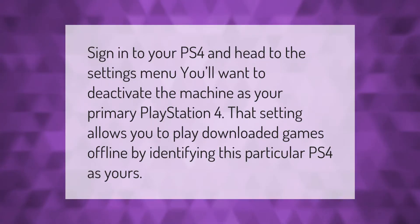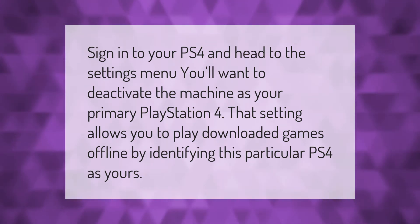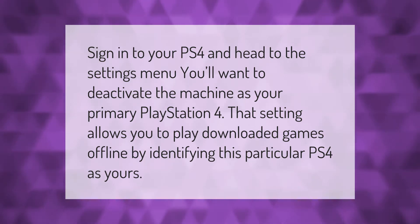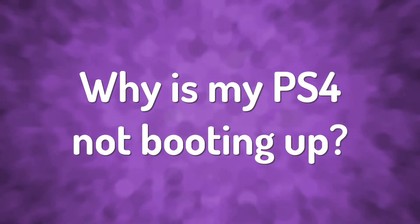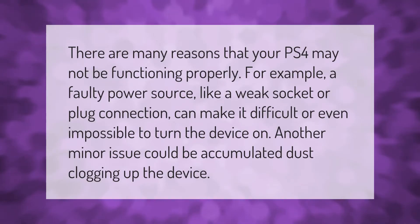Sign into your PS4 and head to the settings menu. You'll want to deactivate the machine as your primary PlayStation 4. That setting allows you to play downloaded games offline by identifying this particular PS4 as yours.